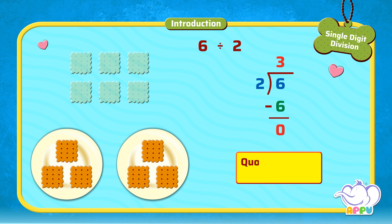Here, 3 is called the quotient and 0 is called the remainder.